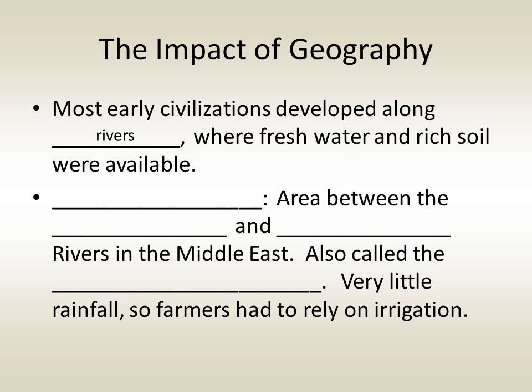This was especially true in the area known as Mesopotamia, the region between the Tigris and Euphrates rivers in the Middle East. It is sometimes referred to as the Fertile Crescent, because the land there is very rich and good for farming. Oddly, there is very little rainfall in the Fertile Crescent, so farmers had to rely on irrigation and the annual flooding of the rivers to keep their crops watered.